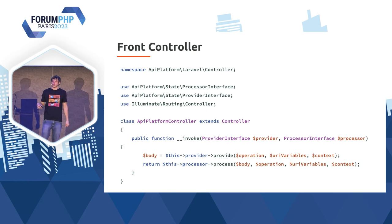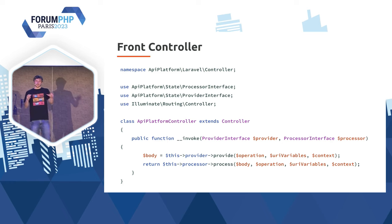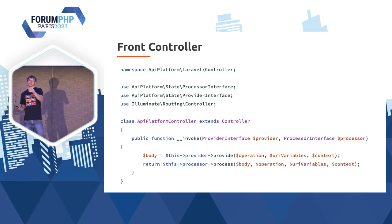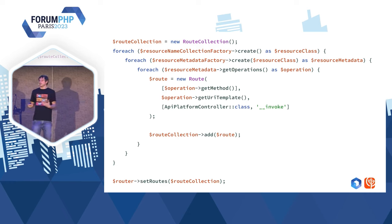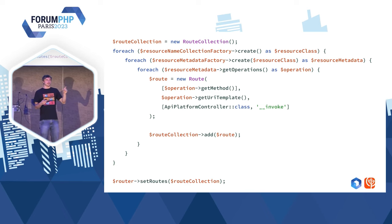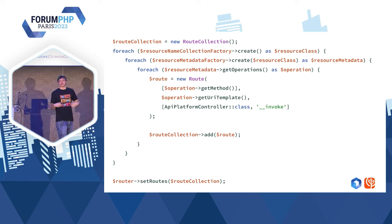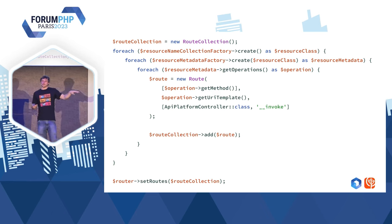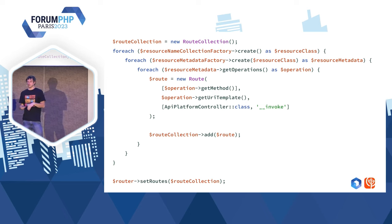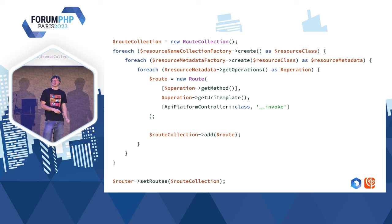Tout ça, je le mets dans un contrôleur, l'API Platform Controller. Vous voyez que j'ai réutilisé les concepts Provider et Processor. Ensuite, je dois brancher tout ça. Comment on fait ? Dès qu'on détecte un attribut API Resource sur un modèle, on a dans API Platform ce qu'on appelle un système de métadonnées, qui nous donne toutes les classes et toutes les opérations. Pour chaque opération, je suis venu déclarer une route Laravel et brancher le contrôleur que vous venez de voir.